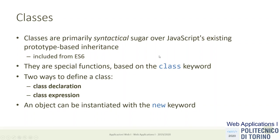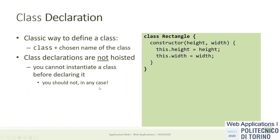We are still reusing the same new keyword for creating new objects from classes instead of functions, so new is still the way to go. Like with functions, we can declare a class in two ways: with a class declaration — the syntax is the class keyword, then the name of the class, and then the body of the class itself, like when you define a standalone function. It's just a statement for declaring a class.